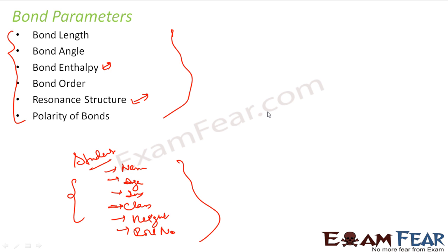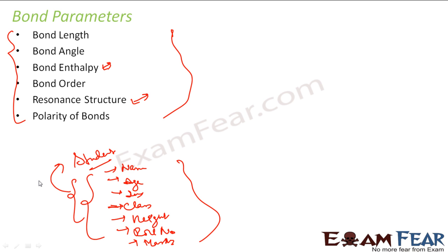These parameters are required for us to have a better understanding of the bonds. Similar to how knowing a student's name, age, and marks helps you understand the student better, with bond length, bond angle, bond enthalpy, bond order, resonance structure, and polarity of bonds you can understand the bond better.